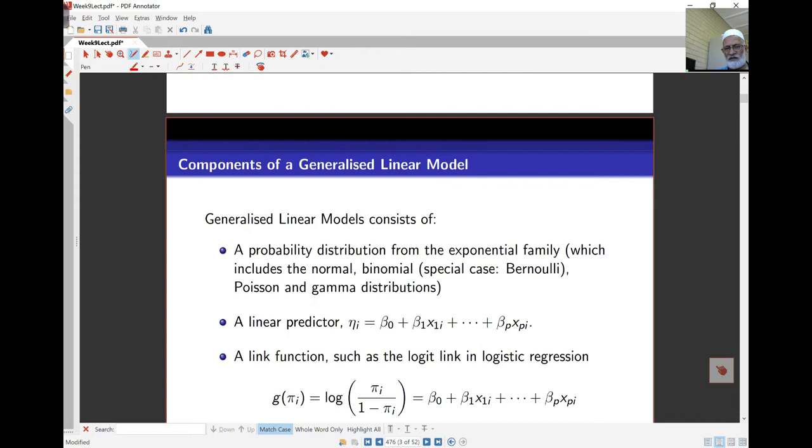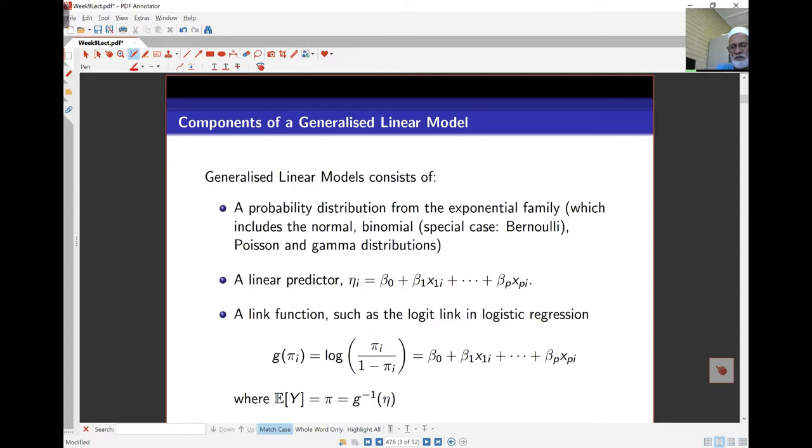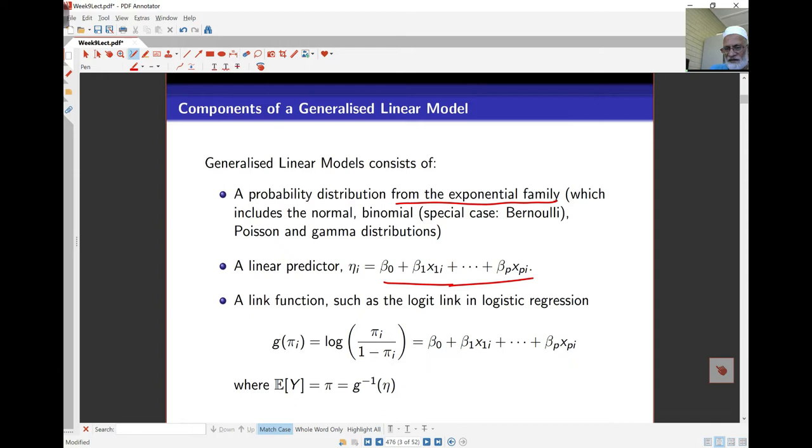We know the generalized linear model consists of a probability distribution from what's called the exponential family and that includes things like binomial, normal and the Poisson which are of interest to us. Some linear predictor, and this linear predictor is what we will take as a regression against all the other covariates. In the case of the binomial distribution, this linear predictor is the log of the odds ratio. And here the mean of y or mean of our observed values or response values is the inverse of this. So we know that it works out as exponential here in this case. And so the mean here is going to be for the binomial distribution.